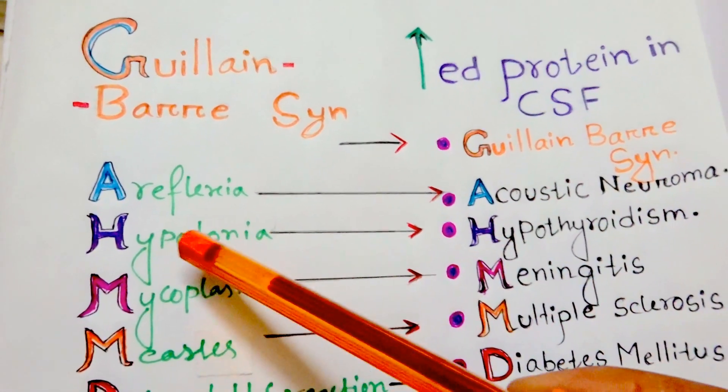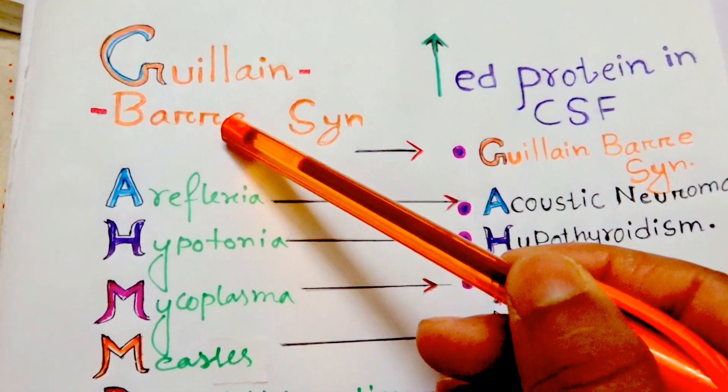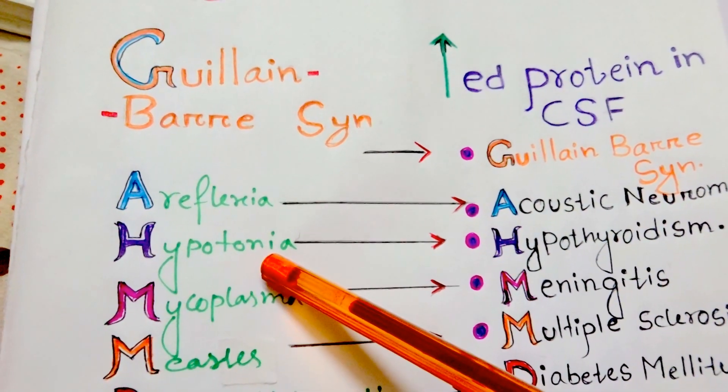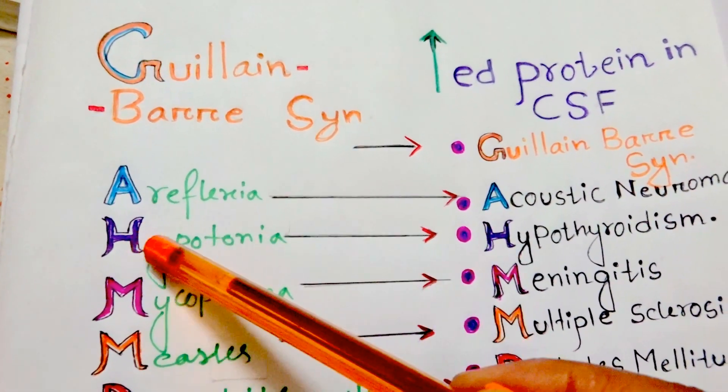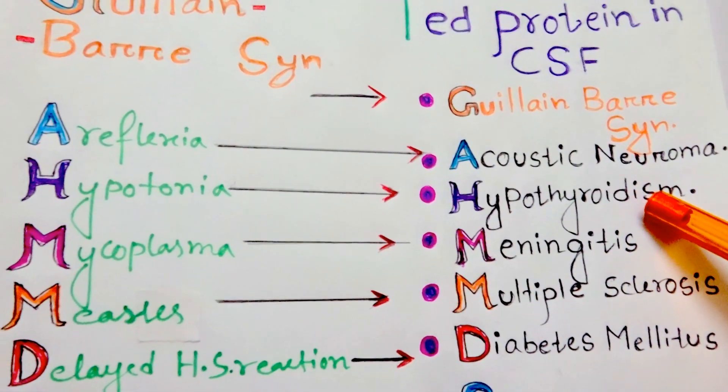The third feature is hypotonia. In Guillain-Barré syndrome, we can see hypotonia. So 'H' for hypotonia corresponds to 'H' for hypothyroidism as another cause of increased CSF protein.